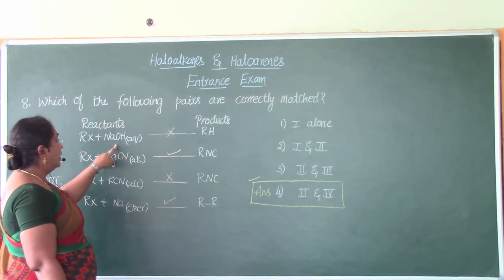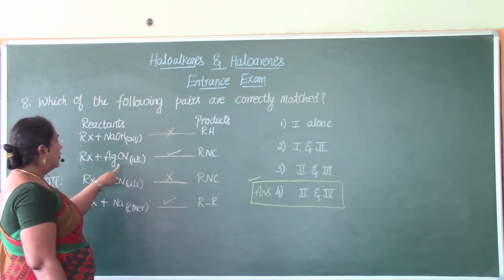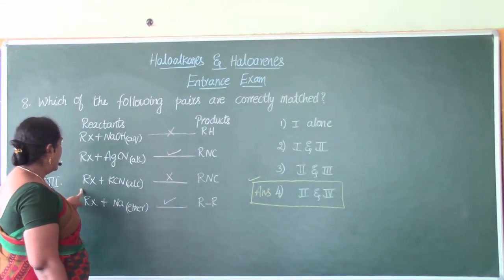Wherein haloalkanes when treated with aqueous NaOH will not form the hydrocarbons. Haloalkanes when treated with alcoholic silver cyanides will form alkyl isocyanides, correct?